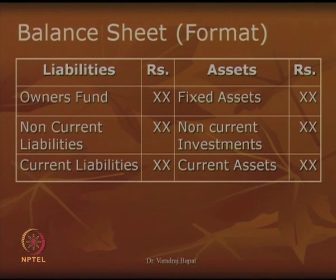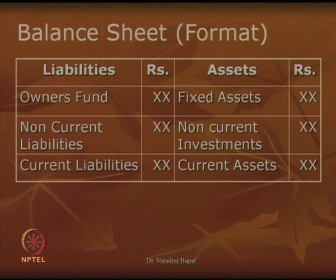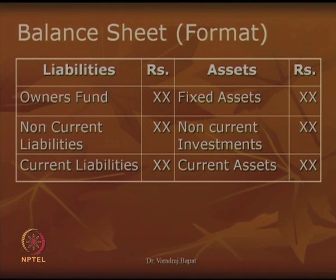On one side you have assets — I have given three categories: fixed assets, non-current investments, and current investments. On liabilities, which represent the resources, you have owner's fund, non-current liabilities, and current liabilities. When we discussed the money cycle we saw to an extent what is meant by a fixed asset. Now we will go a little bit more in depth.